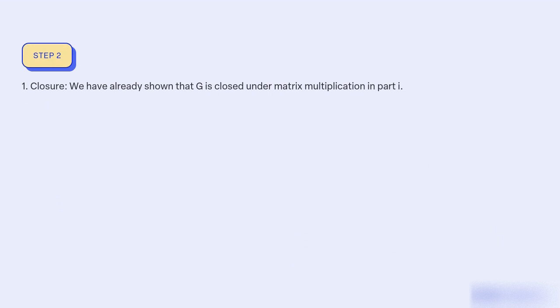One, closure. We have already shown that G is closed under matrix multiplication in part I.